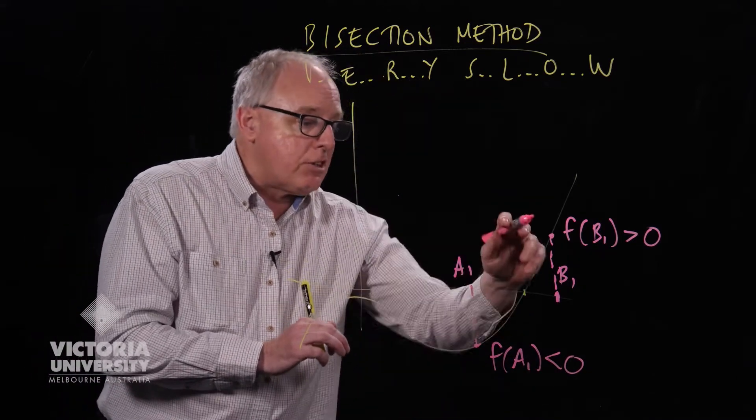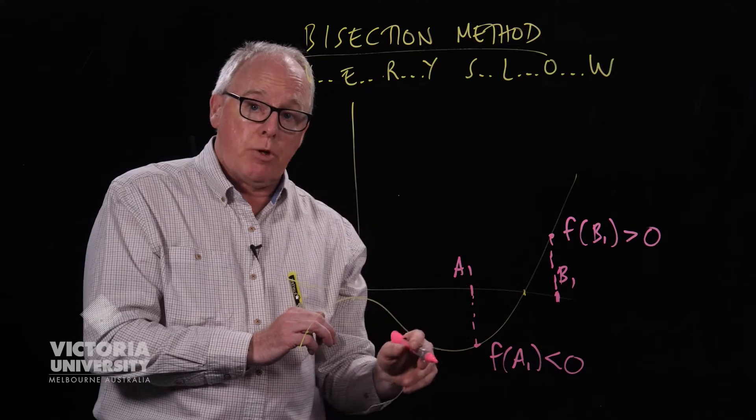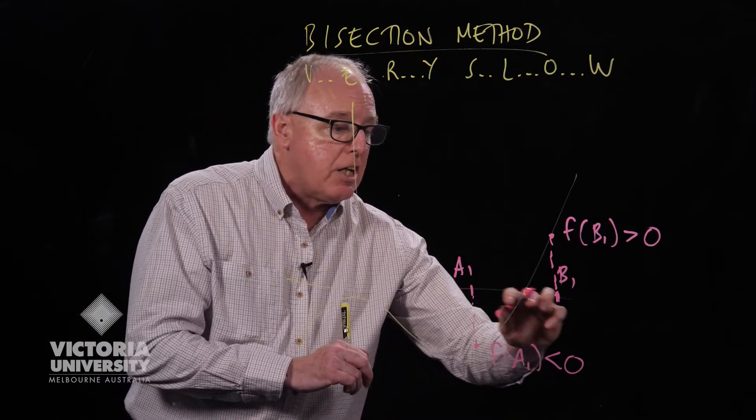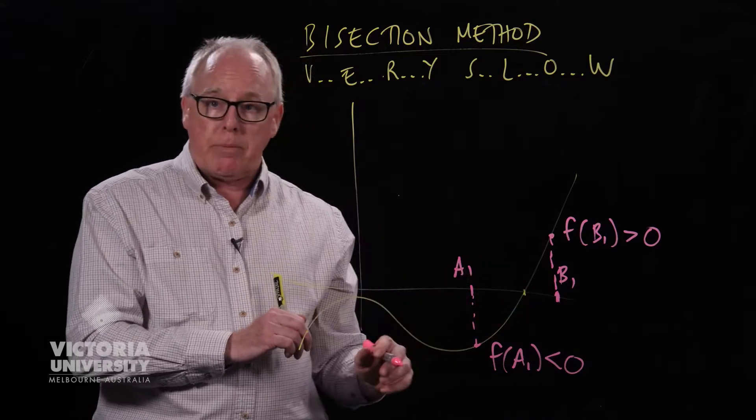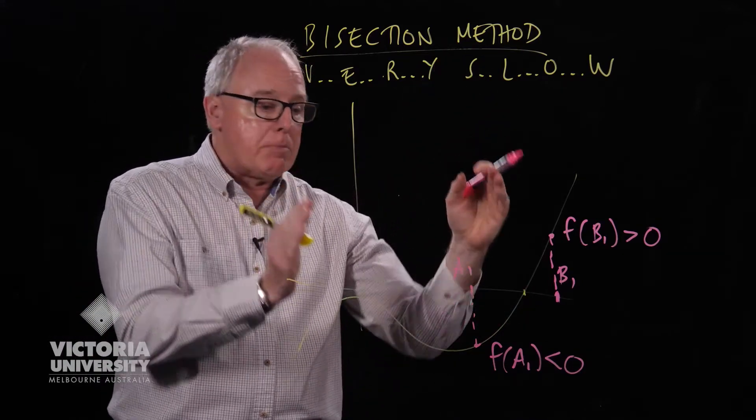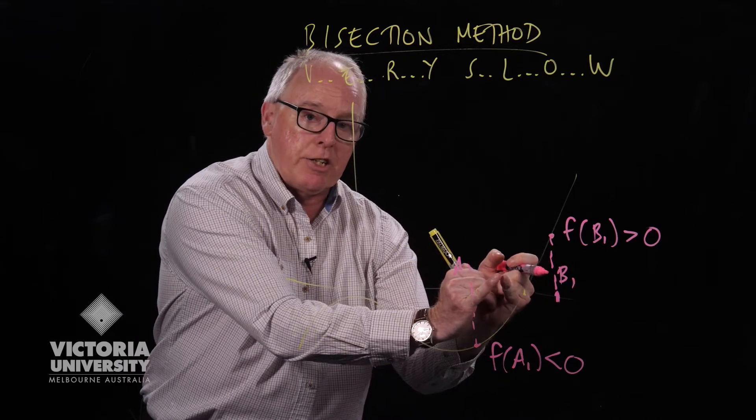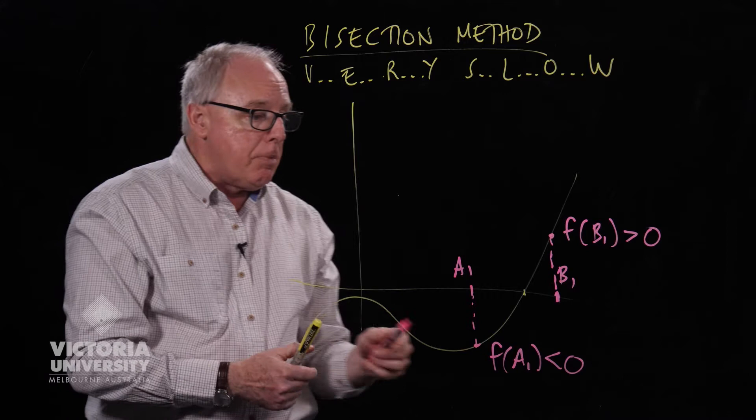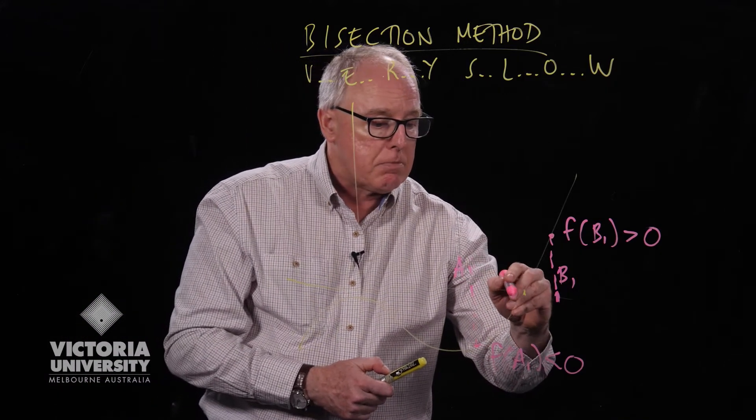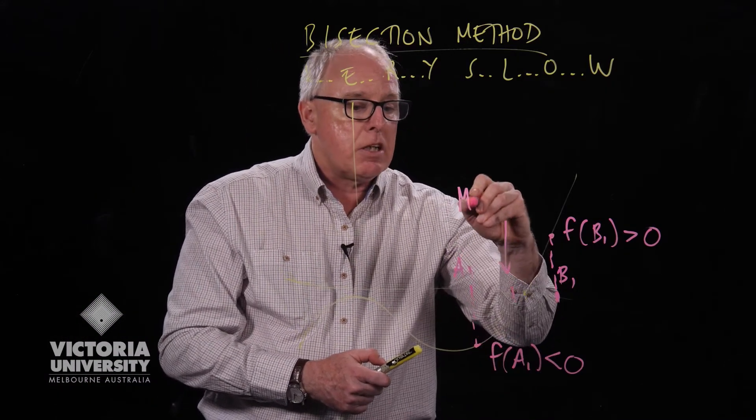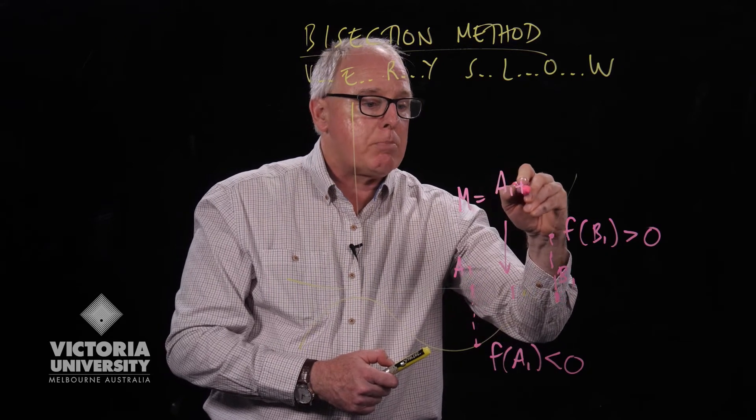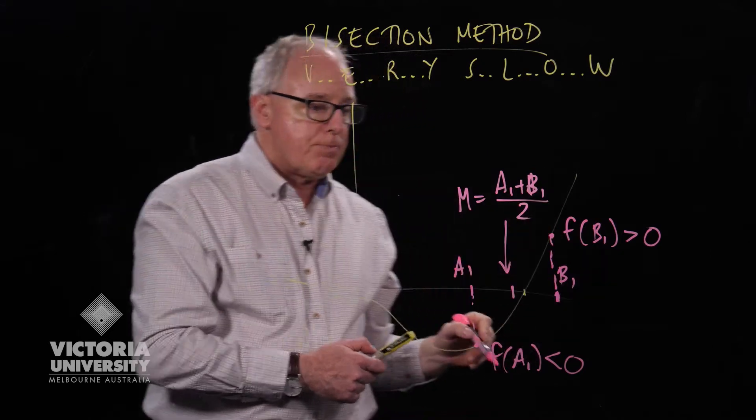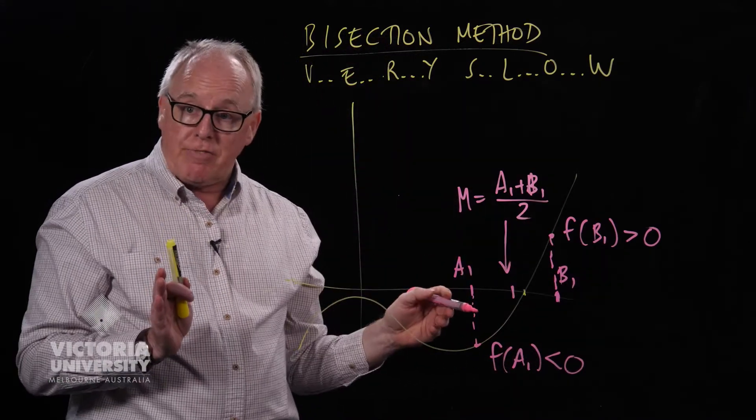And because the two function values have different signs, one positive, one negative, we know that the solution must lie somewhere between a1 and b1. And the whole point of the bisection method is to keep making that region smaller and smaller and smaller. And we do it simply by taking the midpoint. So there's, I'll call it, m equals the midpoint, which is a1 plus b1 divided by two. And we check the function value at that midpoint.